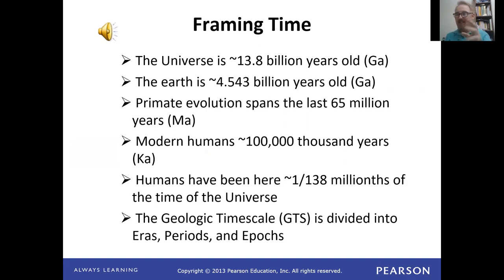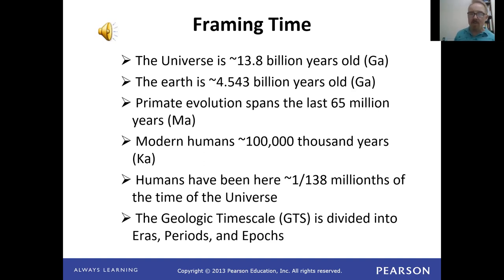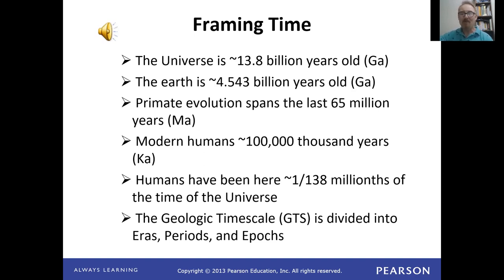On average there's some argument between 13.77 and 13.83 billion years, so 13.8 is a pretty good approximation. The Earth itself formed as a solid planet about 4.543 billion years ago — let's just round that down to 4.5, which is just fine.